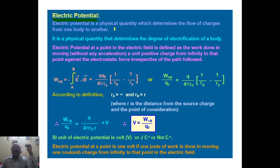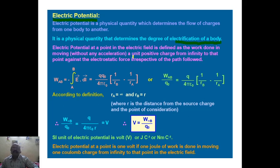Electric potential is a physical quantity that determines the flow of charge from one body to another, and determines the degree of electrification of a body. The electric potential at a point in an electric field is defined as the work done in moving, without any acceleration, a unit positive charge from infinity to that point against the electrostatic force, irrespective of the path followed.